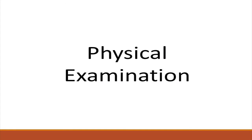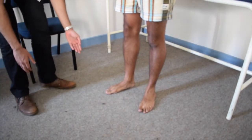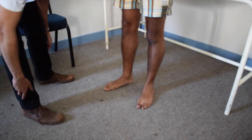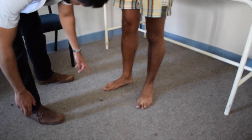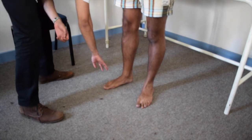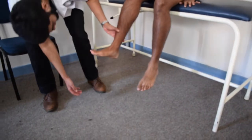Moving on to the examination, we follow the three classic tenets of musculoskeletal assessment: namely look, feel, and move. First, with the patient standing, inspect the foot from all angles, looking specifically for any obvious deformities such as swelling, bruising, wounds or open fractures. Make note of other irregularities such as scars, pes planus and pes cavus. Inspection is then concluded with the patient seated.